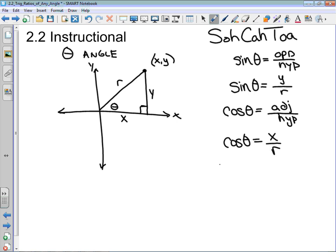And then the last one, which is tan theta, that's equal to opposite over adjacent, according to our SOHCAHTOA trick. But in reference to x, y, and r, tan theta is actually equal to y over x.